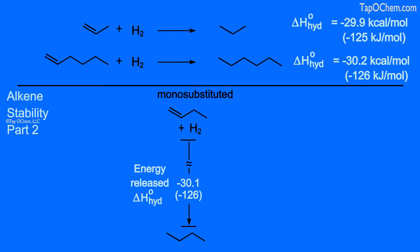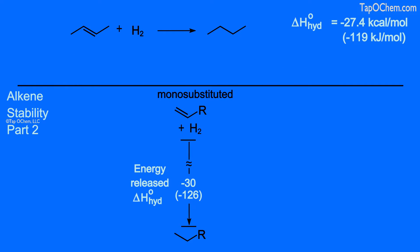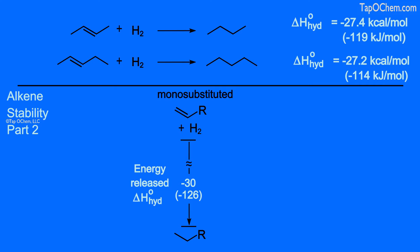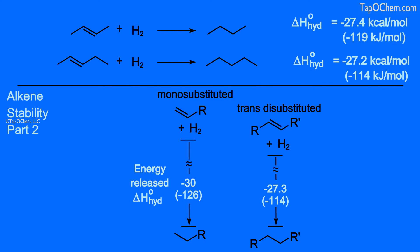With this in mind, let's modify the bottom alkene and replace the alkene substituent group with an R group for the reactants and the products. Now let's look at disubstituted alkenes. First, we will look at two alkenes with trans-substituents: trans-2-butene and trans-2-pentene. When these are hydrogenated, they release slightly more than 27 kilocalories per mole of energy. This is a general value for trans-alkenes, so let's plot this in the bottom section. As we would expect from the Part 1 animation, trans-disubstituted alkenes are lower in energy than monosubstituted alkenes.